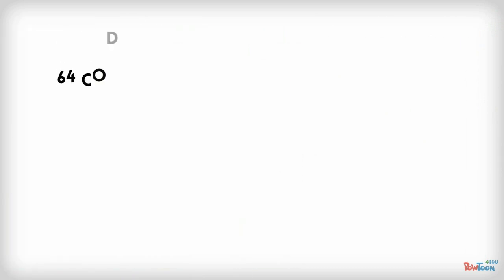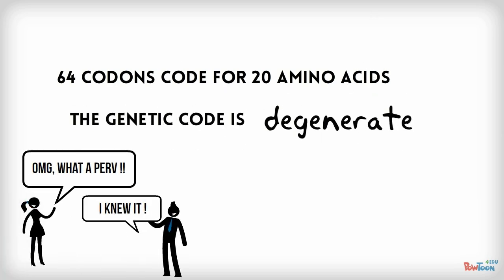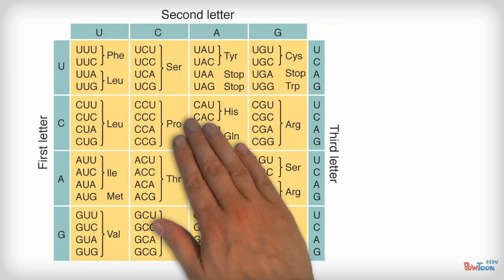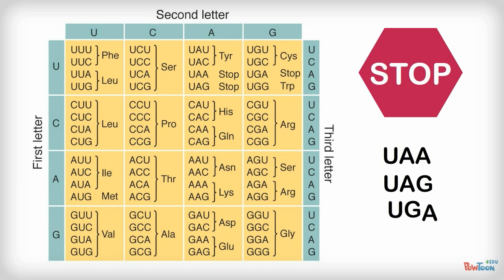There are 64 codons in the genetic code and only 20 amino acids, so most amino acids are coded for by more than one codon. There are actually three codons that do not code for any amino acid — they are the stop codons. As the name implies, they are used to indicate the end of the polypeptide. The three stop codons are UAA, UAG, and UGA.